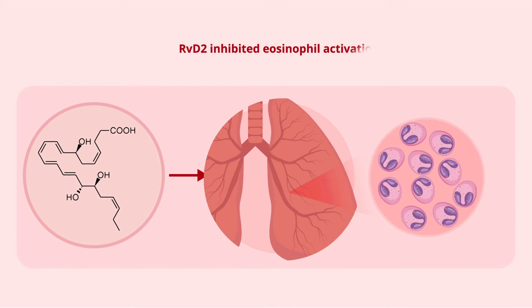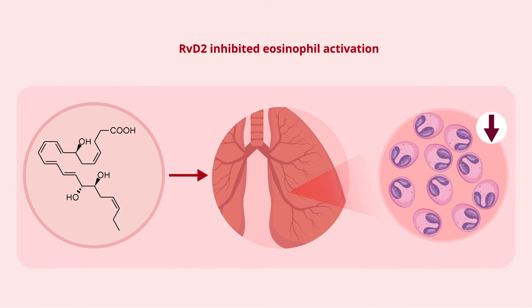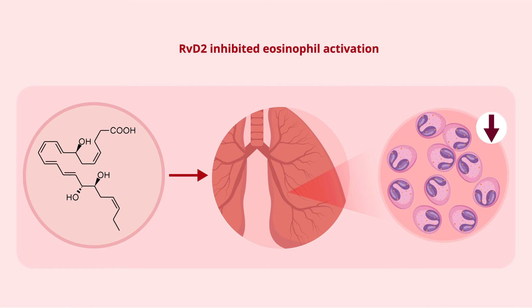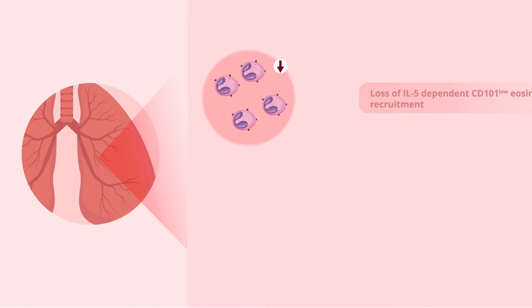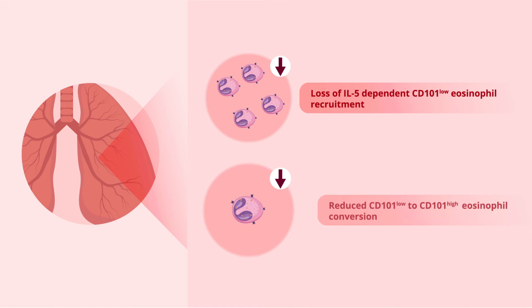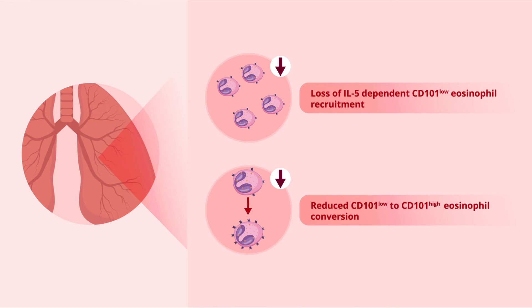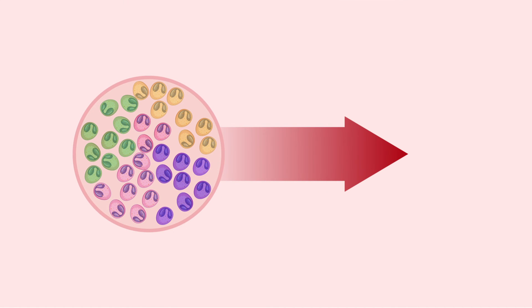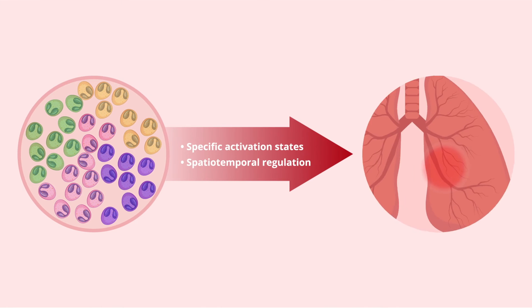Administering RVD2 reduced the number of eosinophils and inhibited their activation. This occurred by loss of IL5-dependent CD101 low eosinophil recruitment and reduced CD101 low to CD101 high eosinophil conversion. The authors suggest eosinophils are a diverse group of cells with specific activation states and spatial temporal regulation during the resolution of inflammation.